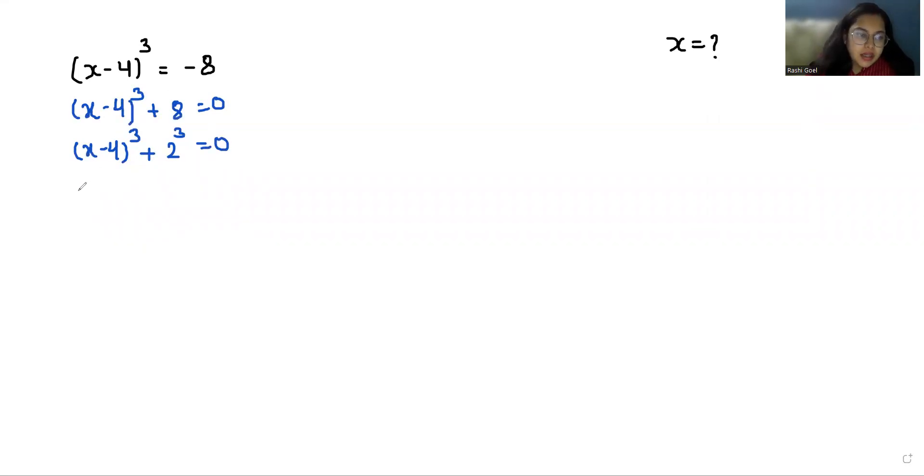Now I am going to use a very famous identity: a³ + b³ = (a + b)(a² + b² - ab), where a is (x - 4) and b is 2. So let's put the values: (x - 4 + 2)[(x - 4)² + 2² - (x - 4)(2)].